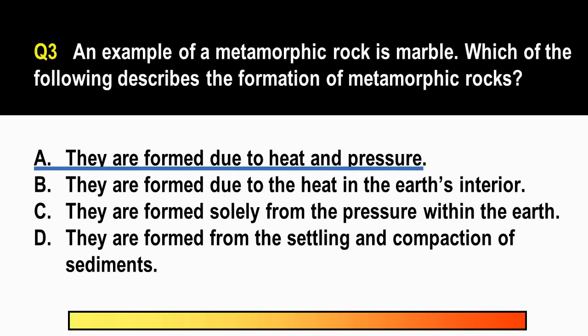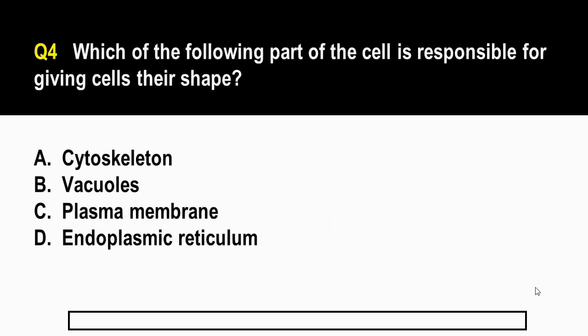Question number four. Which of the following part of the cell is responsible for giving cells their shape? A. Cytoskeleton. B. Vacuoles. C. Plasma membrane. D. Endoplasmic reticulum.